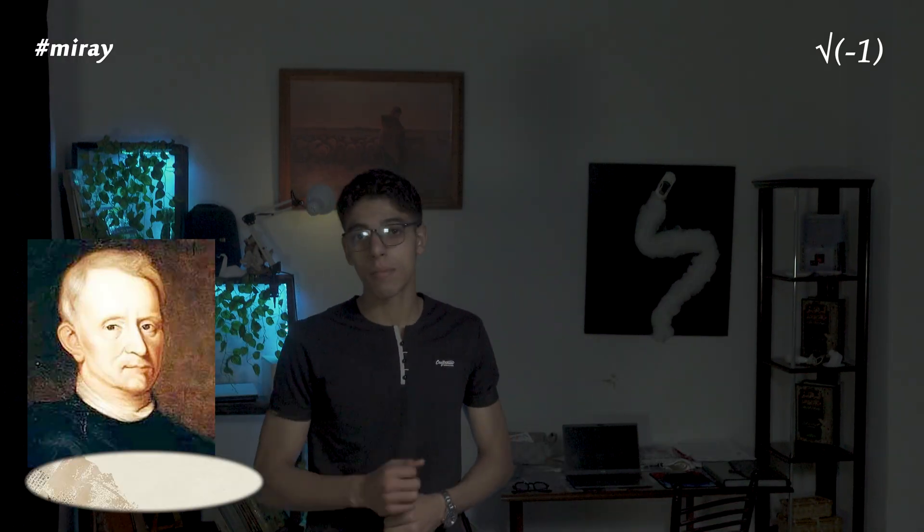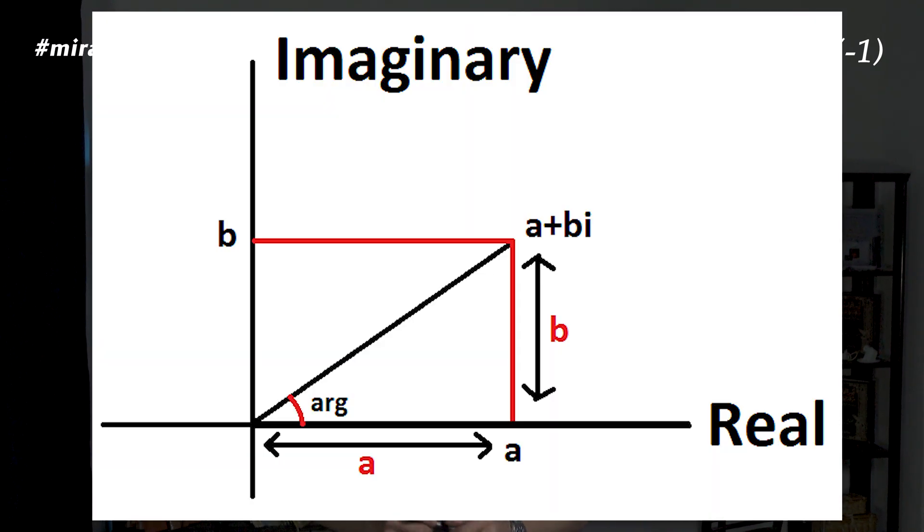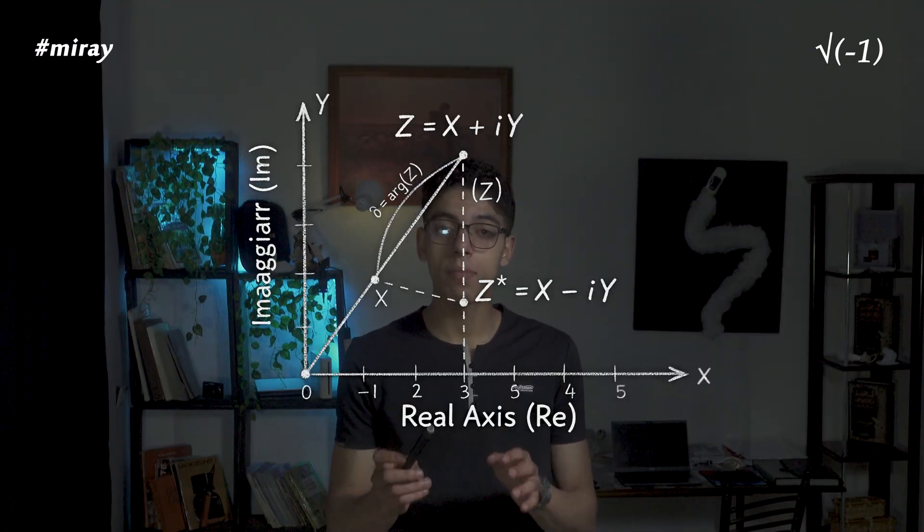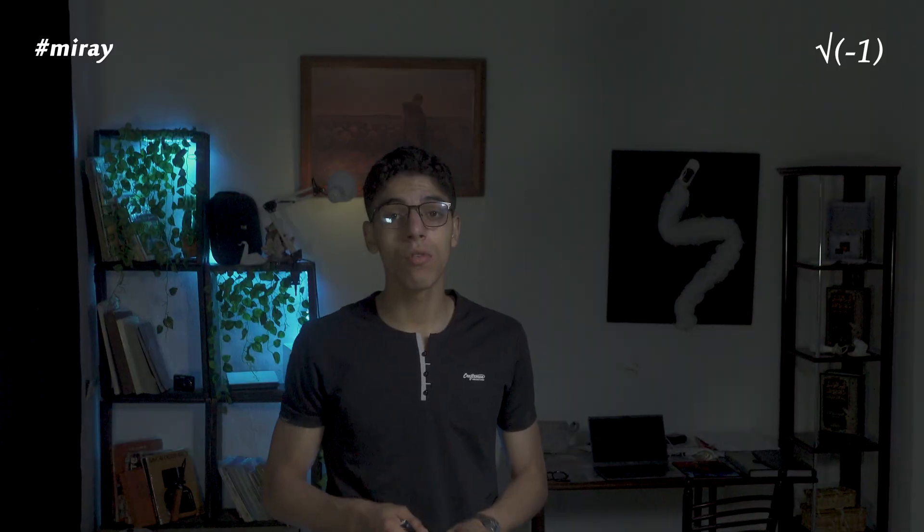In the 19th century, the mathematician Argand proposed a new way to see complex numbers — not just to calculate them, but to draw them. Imagine adding a vertical axis for imaginary numbers, forming what is now called the Argand plane. Every complex number can then be represented as a point or vector on this plane, having both a real part on the x-axis and an imaginary part on the y-axis. This vector form helps you understand a complex number not only as abstract values, but also as quantities with magnitude and direction — just like force or movement in physics.